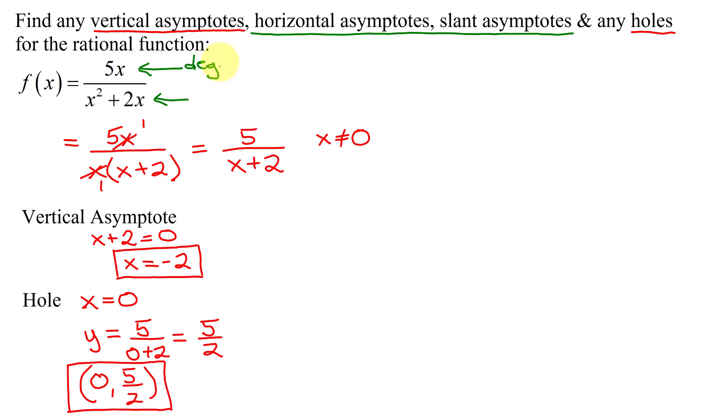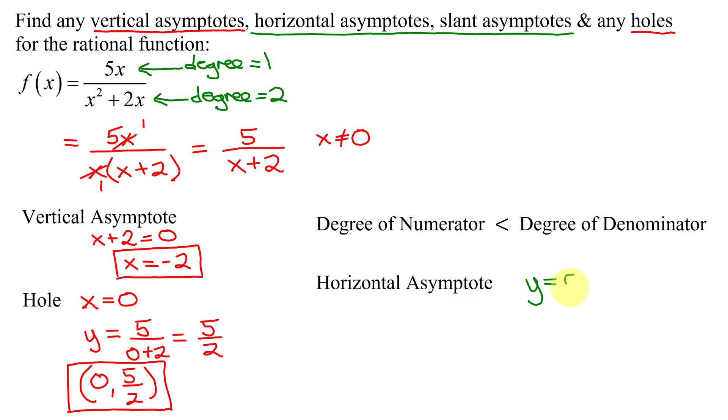So for my numerator, what is the degree? What's the highest exponent on any of the x's? It's 1. In the denominator, what's the highest exponent on any of the x's? It's 2. And since 1 is less than 2, the degree of the numerator is less than the degree of the denominator. This always gives a horizontal asymptote with the equation y = 0.